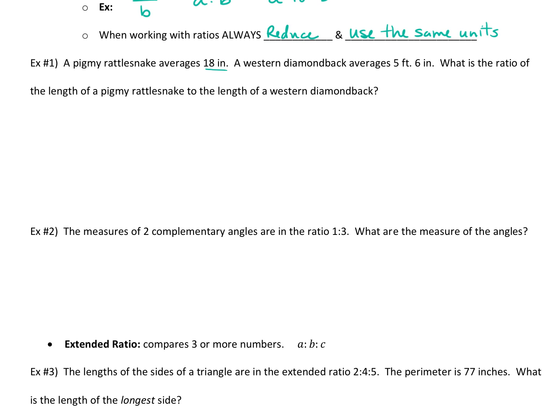So let me show you what I mean by that with this example. It says a pygmy rattlesnake averages 18 inches. A western diamondback averages 5 feet 6 inches. What is the ratio of the length of a pygmy rattlesnake to a diamondback? So we are doing rattlesnake, I usually do the comparisons as a fraction, to diamondback. That's the ratio we're going to set up, which is what they're asking us for. What number do you think we're going to put on top? What number represents the rattlesnake? The 18, right?